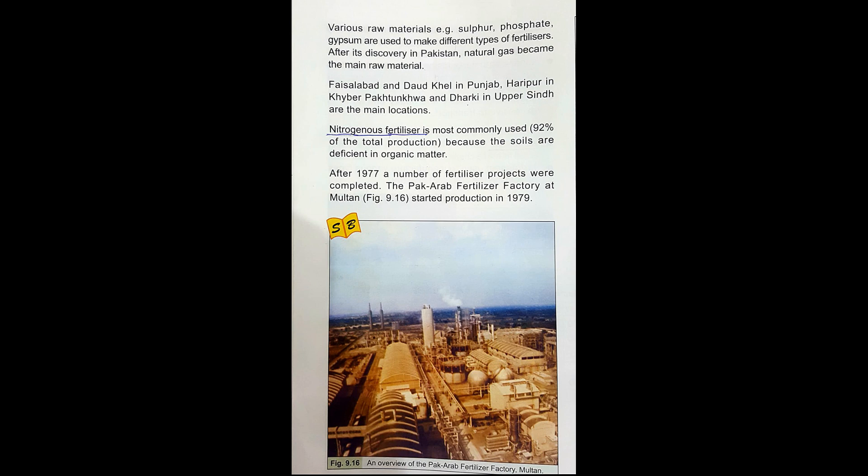After 1977, a number of fertilizer projects were completed. The Pak-Arab Fertilizer Factory at Multan started production in 1979. It is the largest fertilizer complex in Pakistan and the only factory producing calcium ammonium nitrate and nitrophosphate. That is enough for today — I hope you are clear about these two industries. Learn the key facts. Thank you for listening. Allah Hafiz.